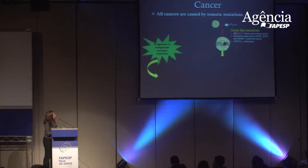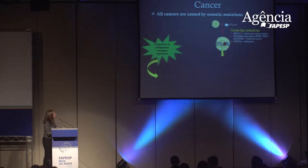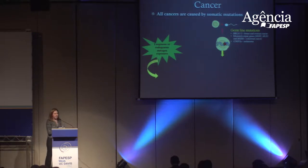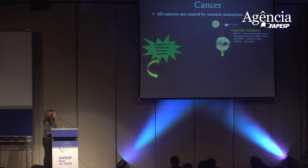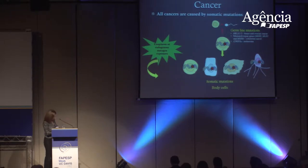Mutations in BRCA1 and BRCA2 are associated with a higher risk of developing cancer. Mismatch repair genes are associated with colorectal cancer, and CDKN2A is associated with melanoma. Germline mutation in combination with exogenous and endogenous mutagenic exposure can cause somatic mutation in body cells.